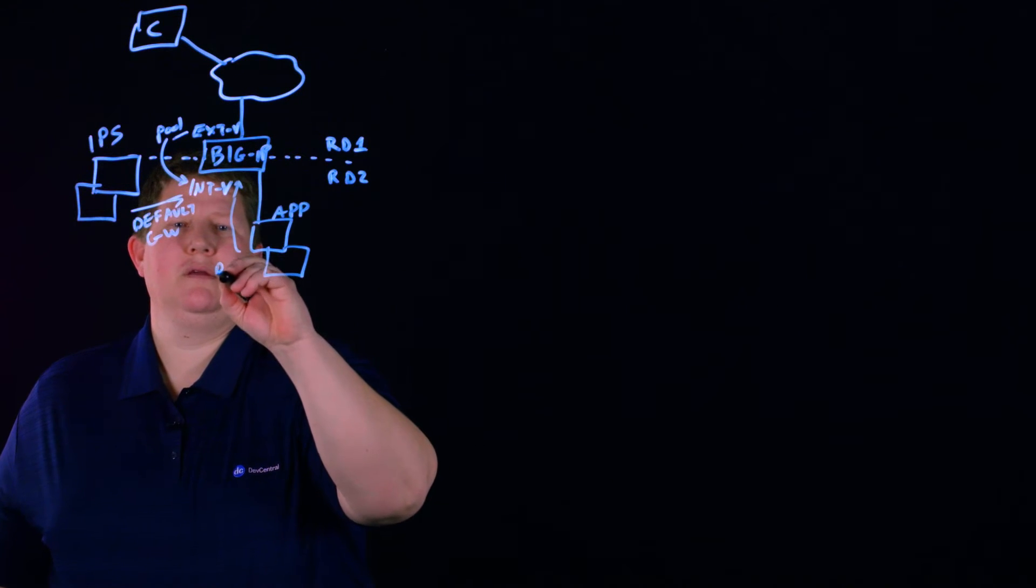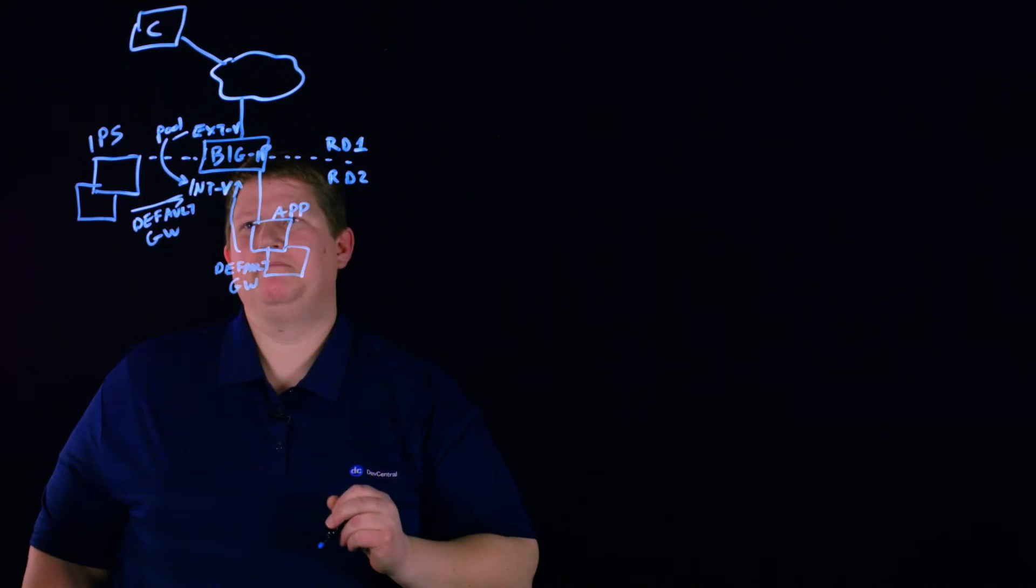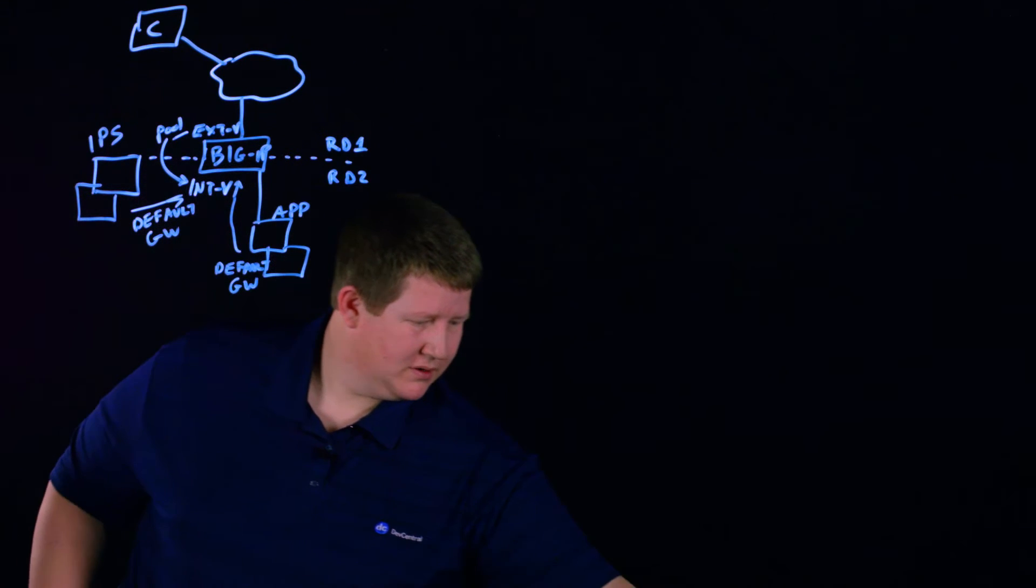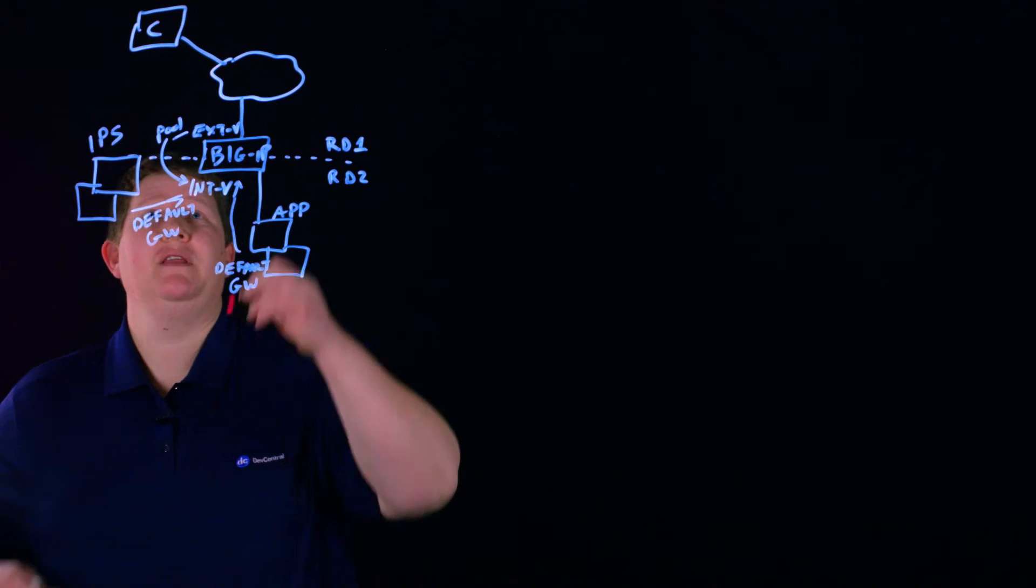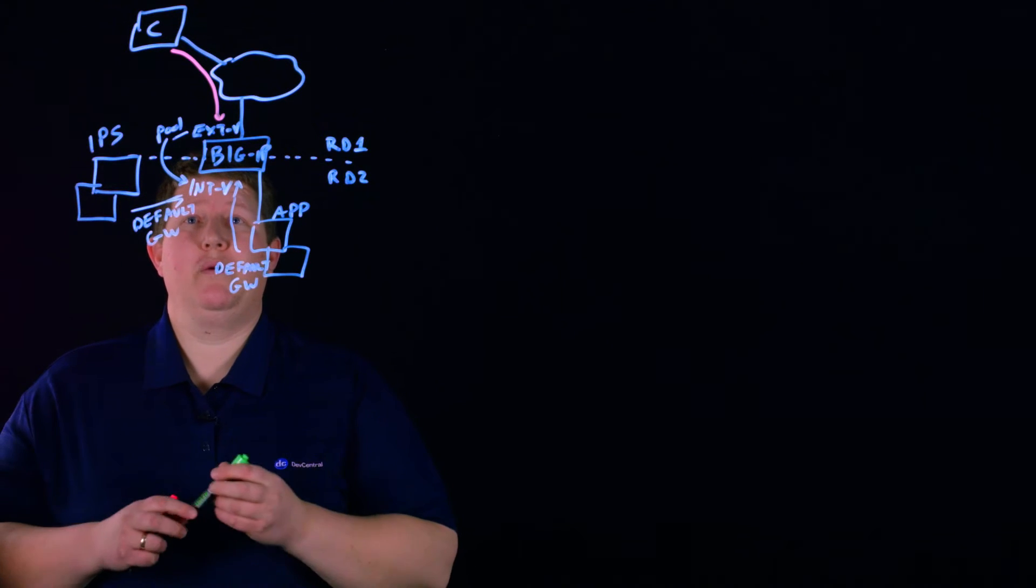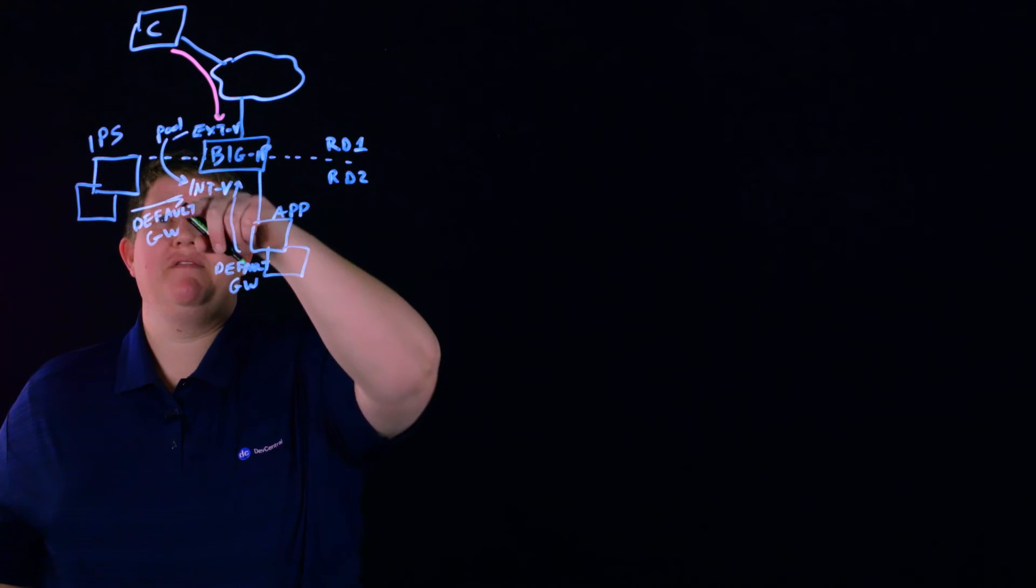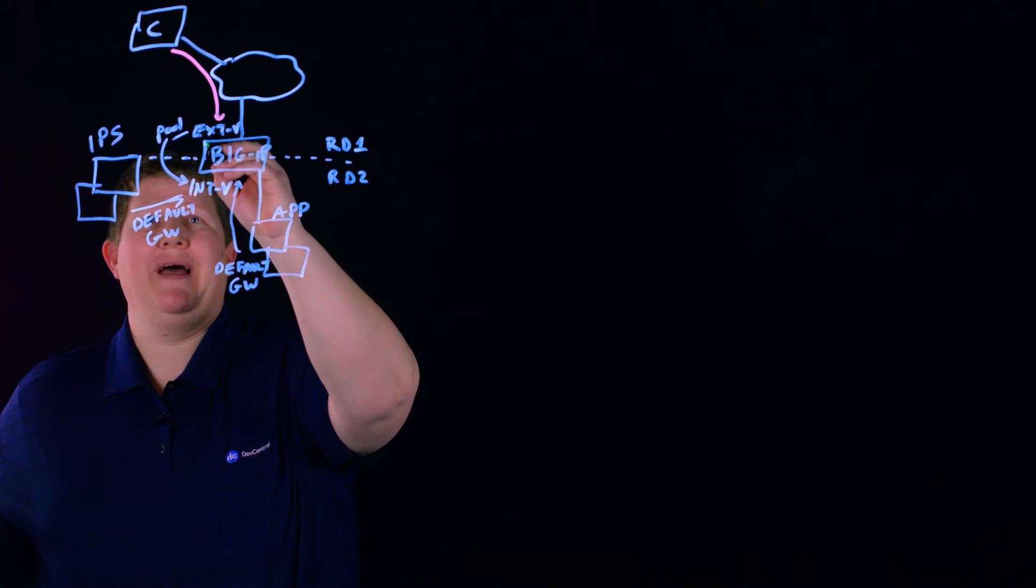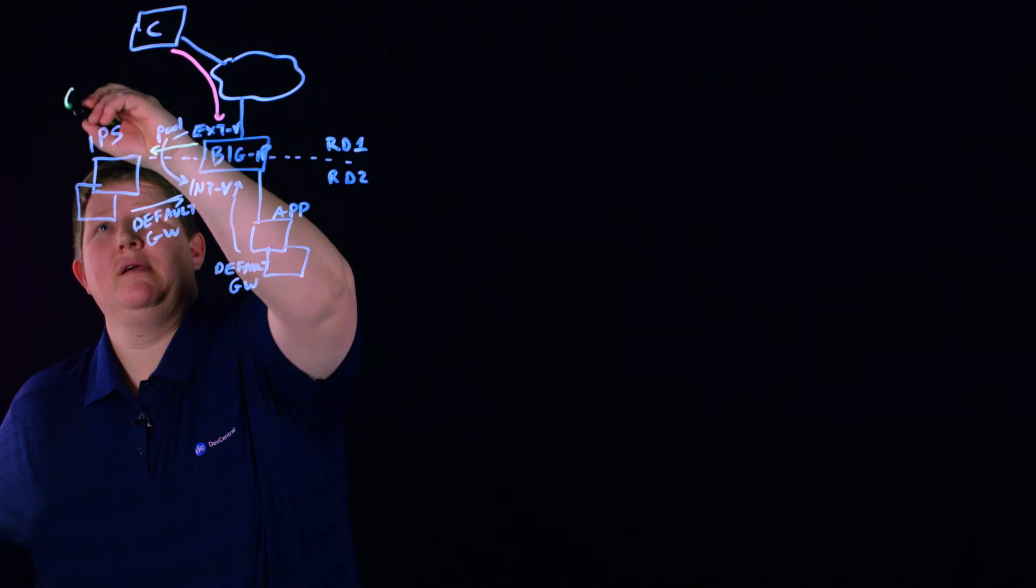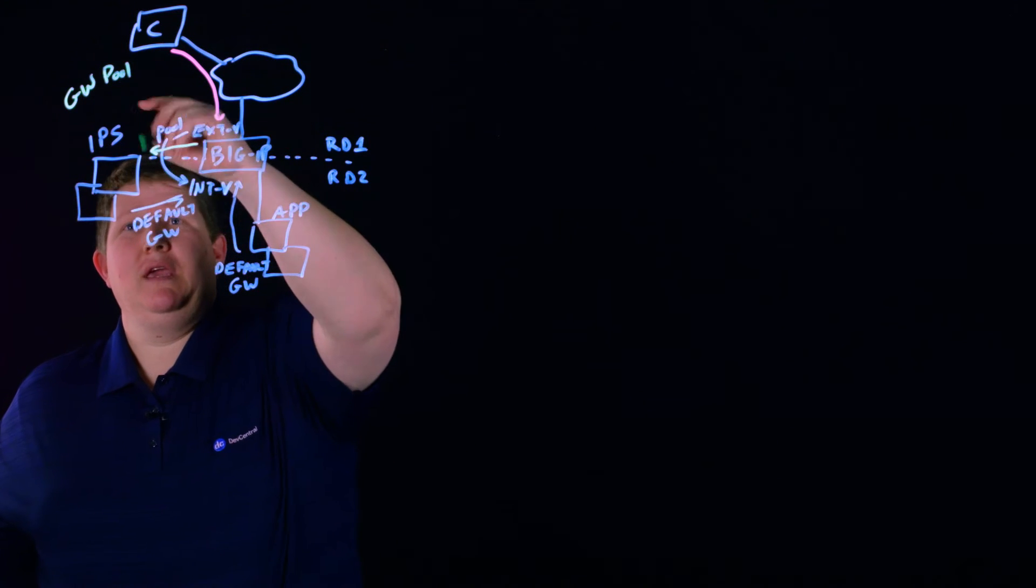From a traffic perspective, we can come in encrypted from the client to this external VIP, and then we will send that traffic over—internal VIP is the pool member of that—and we're going to route that over to the IPS via a gateway pool.